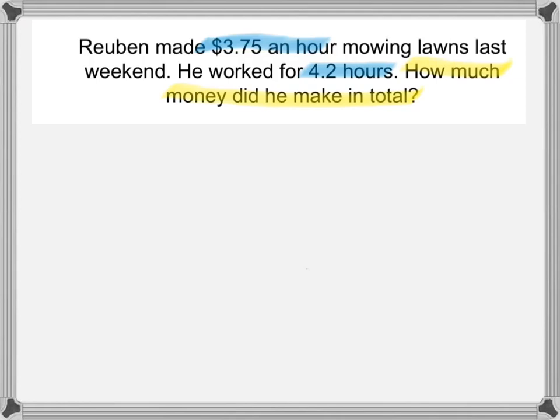Alright, let's come up with a plan to solve this problem. I see that the same thing is happening every hour — he's making $3.75 an hour. So, that tells me that we have some equal groups going on. When the same thing is happening for each group, in this case each hour, the groups are equal. Here's a strategy we use when we have equal groups going on.